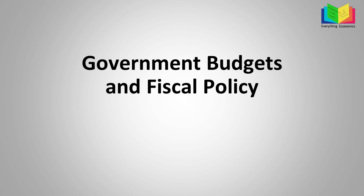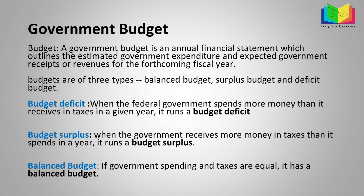First thing first — government budgets. A government budget is an annual financial statement which outlines the estimated government expenditure and expected government receipts or revenues for the forthcoming fiscal year. I will divide this definition into several parts. The first is that a government budget is a financial statement which is prepared annually by every country throughout the world — so it is an annual financial statement.